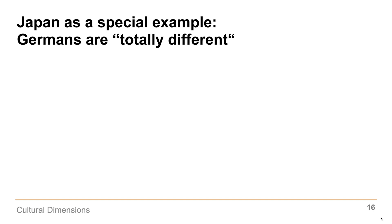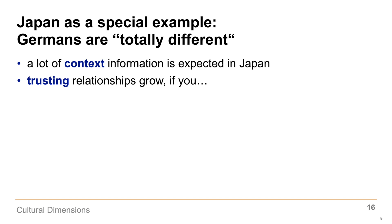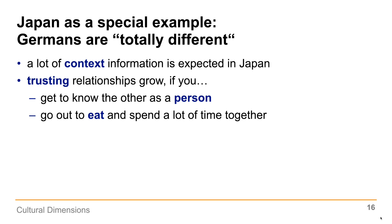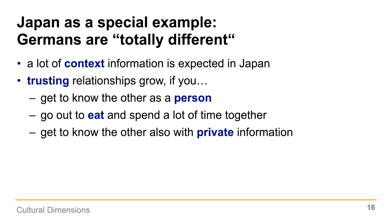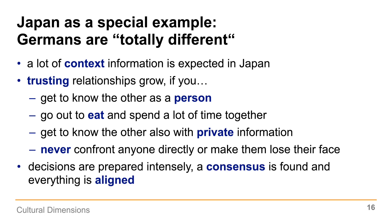Japan is a special example. From this point of view, Germans are totally different. A lot of context information is expected in Japan — they say 'hear one, understand ten.' You just hear one piece of information but understand ten, getting a much broader picture in your mind. Trusting relationships grow if you get to know the other as a person, go out to eat, spend time together, and share private information. You never confront anyone directly or make them lose face. Decisions are prepared very intensely, a consensus is found, everything is aligned — sometimes even before the official meeting.